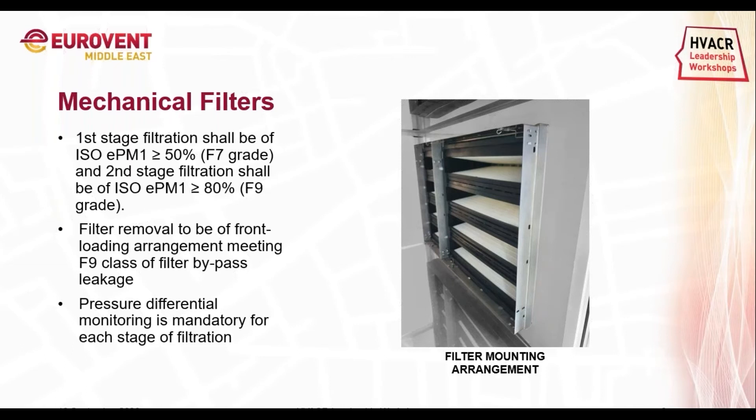The location of the filter is very important. The second stage of filtration should be placed after the fan section. Filter removal is of two types: front-loading arrangement and side-loading arrangement. Front loading is preferred to achieve filter bypass leakage of F9 as per DIN EN 1886 standard, which confirms only 0.5% leakage out of the total air volume. A pressure differential manometer is mandatory for each stage of filtration.